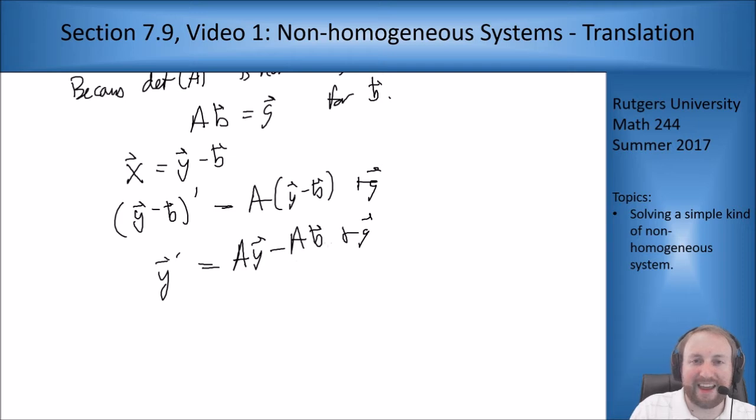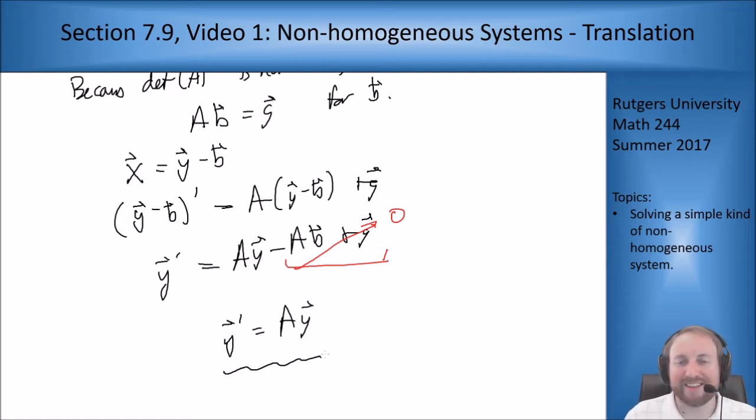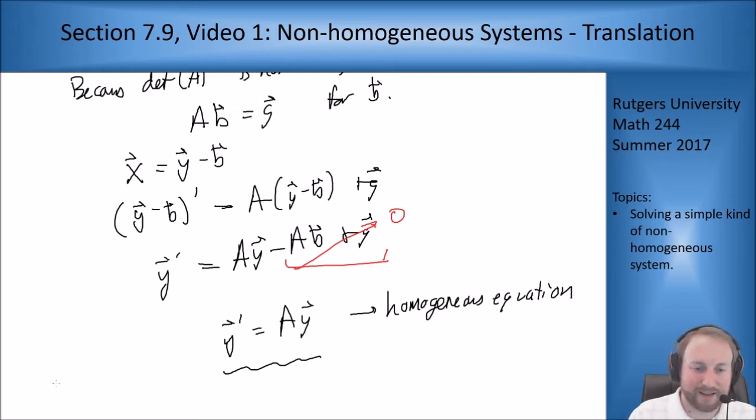But remember ab equals g, so this term is zero. Which means I'm back to solving y prime equals ay. That's a homogeneous equation. So all the tricks we've had so far for all of chapter 7 will tell us how to solve this. And then x equals y minus b gives our solution x.